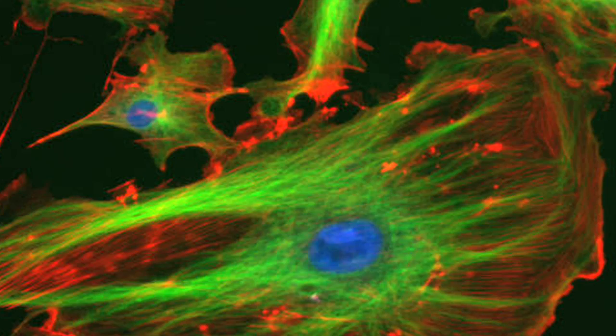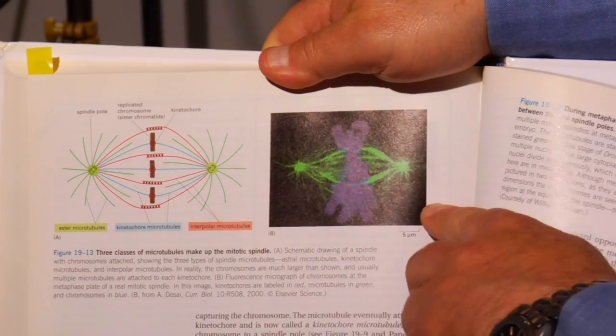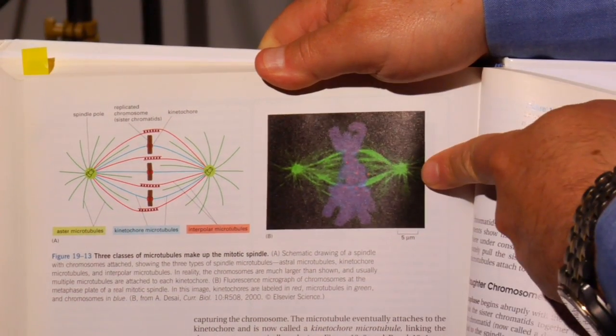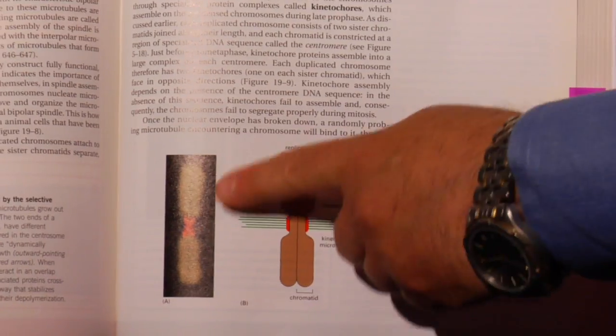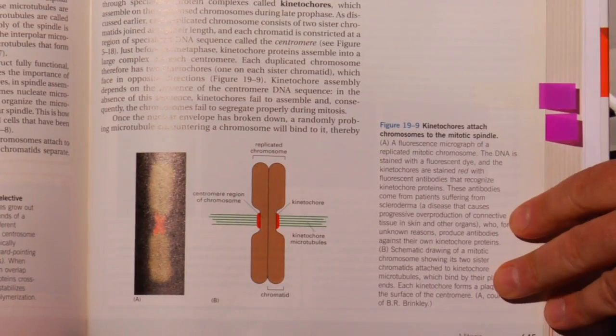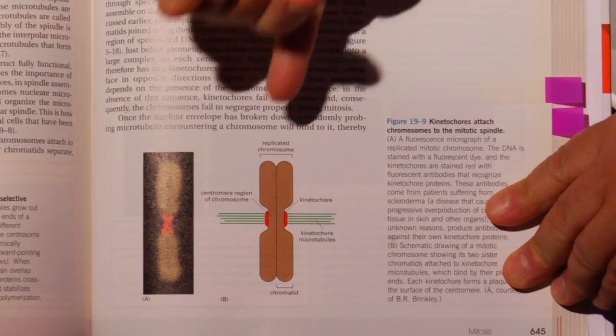One of the most important things that I want to get across in the cell biology course is for the students to understand that it's not a static process — that cells are not these pictures that they see in the textbooks from an electron micrograph or a light micrograph of cells just kind of sitting there with all these structures. It's actually a very dynamic process.